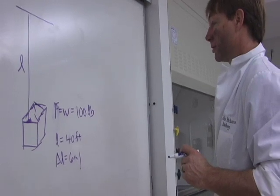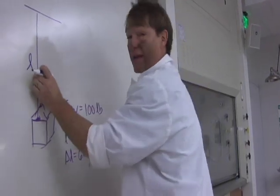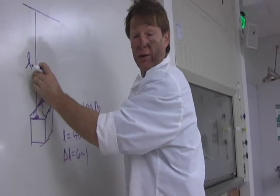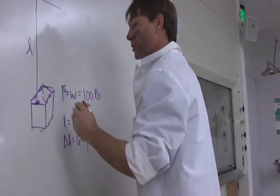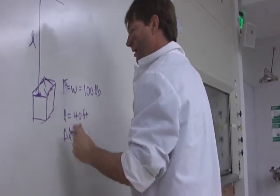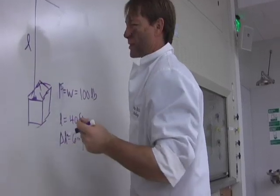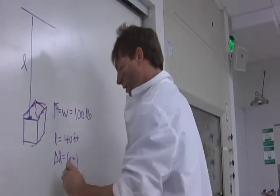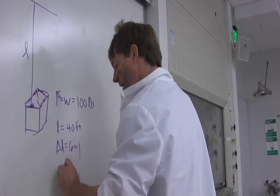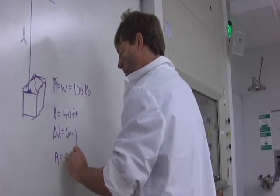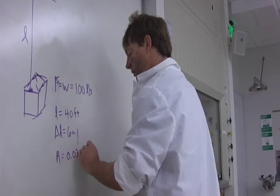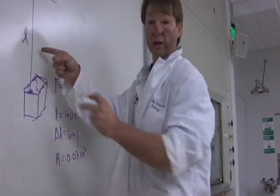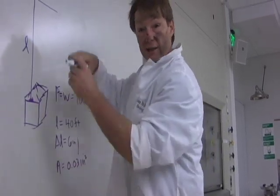And what else? Oh, the area of the line. That's the area, right? The force per area. So the area of the line - maybe it's a tenth of an inch. So it's a tenth of an inch squared, which would be a hundredth of an inch. Let's say the area is 0.03 square inches. That's the cross-sectional area of this line.